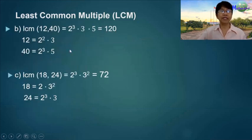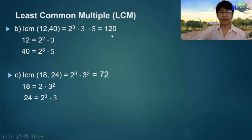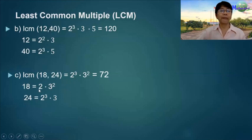Letter B: LCM of 12 and 40 — the common factor is 2, but the highest power is 2-cubed. So we have 2-cubed times 3 times 5, which equals 120. Letter C: we have 2-cubed times 3-squared, and the answer is 72.